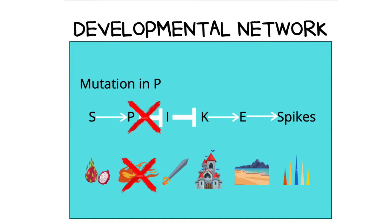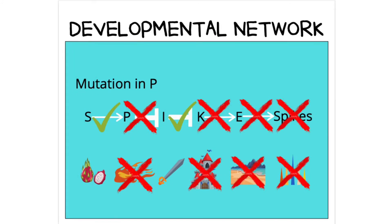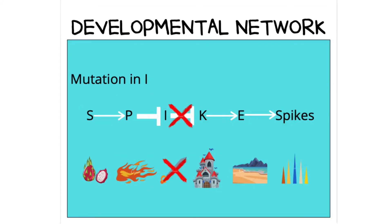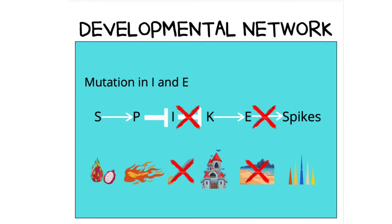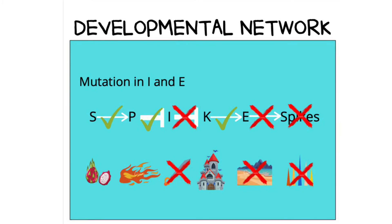For example, say that the dragon was not able to breathe fire no matter how much dragon fruit he ate. The knight would then be able to stab him with the sword and the dragon would never be able to leave the castle and drink water from the lagoon and form spikes. However, say that the knight lost his sword — then the dragon could escape the castle and drink the water and form spikes regardless of his ability to breathe fire. But if the lagoon was dry, the dragon would not form spikes because the lagoon is the ultimate contributing factor to forming spikes, and what is upstream in the network does not have as great of an impact.